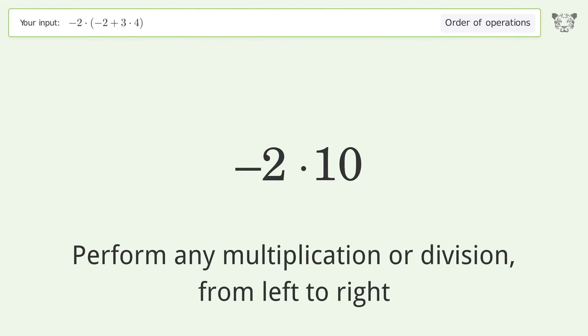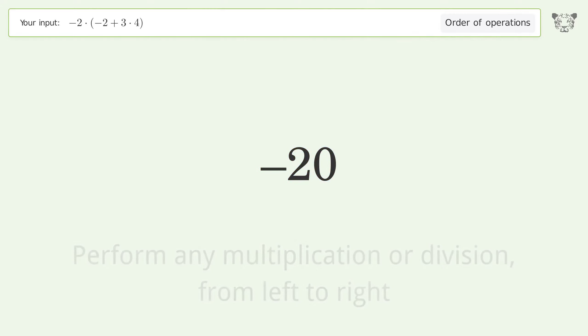Perform any multiplication or division from left to right: negative 2 times 10 equals negative 20. And so the final result is negative 20.